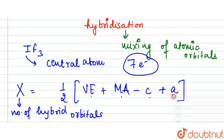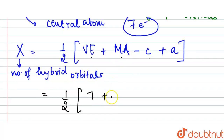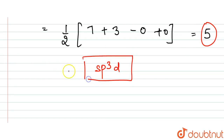Applying the formula for IF₃: valence electrons of the central atom = 7, monovalent atoms attached = 3, charge on cation = 0, charge on anion = 0. So X = ½ × (7 + 3) = 5. When the number of hybrid orbitals is 5, the hybridization is sp³d.